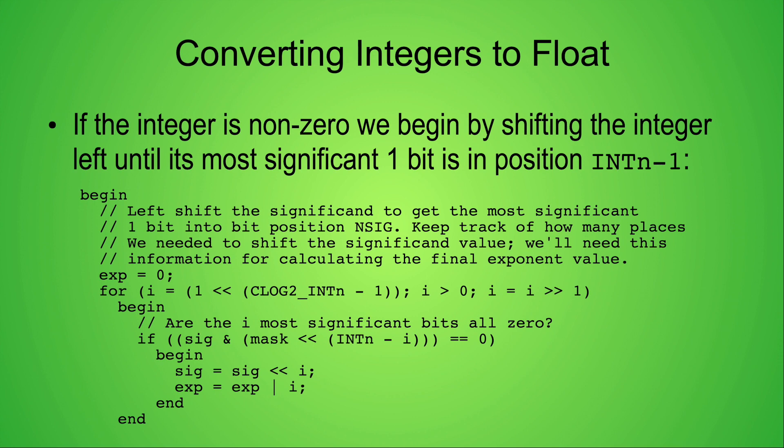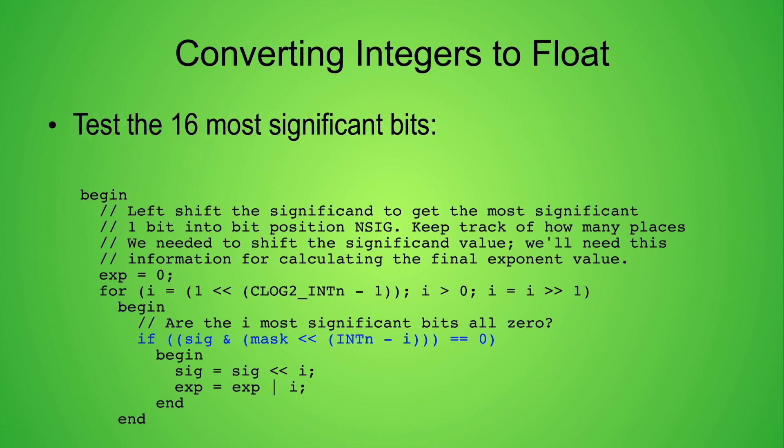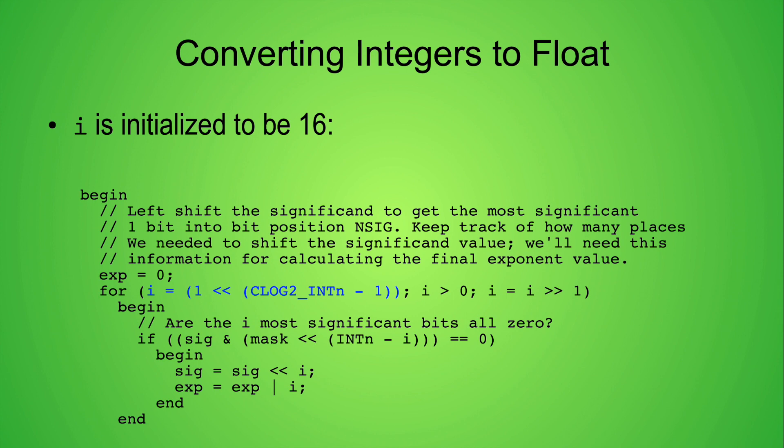Now we're left to the case that the input value is non-zero. We need to move the most significant one bit into the most significant bit of SIG. Here is where our loop comes in. I use similar logic in the FP class module to normalize the significand of subnormal numbers. The first iteration through the loop, we test to see if the 16 most significant bits of SIG are all zero. If they are, we shift the value in SIG left 16 places, and we increment EXP by 16. The code doesn't explicitly use the number 16. The value 16 is computed from $clog2_int_n. And in turn, $clog2_int_n was computed from the number of bits in our integer input value.